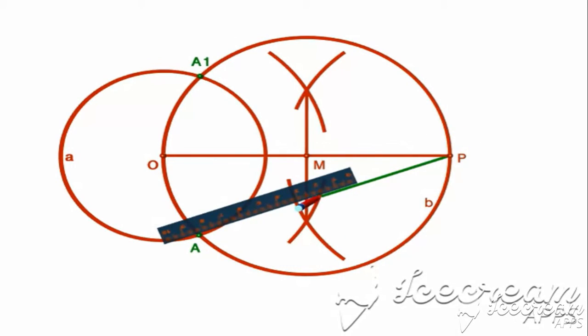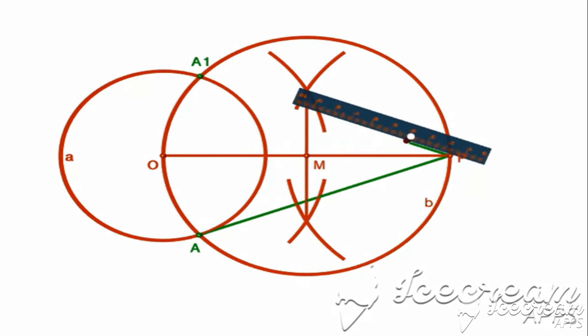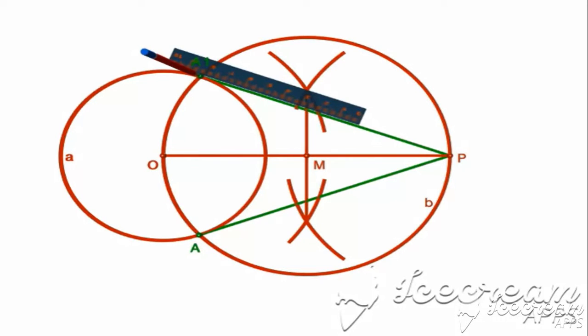Now, join P A and P A' to get our required tangents to the circle.